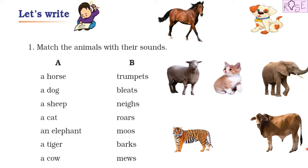Now let us read the sounds that are given in column B: trumpets, bleats, neighs, roars, moos, barks, and mews.